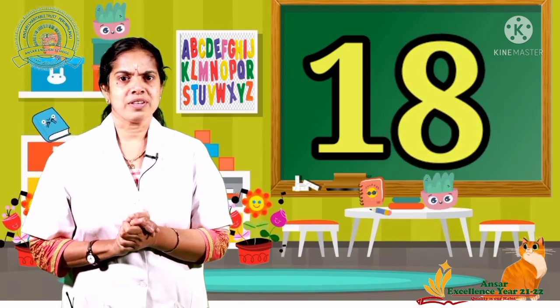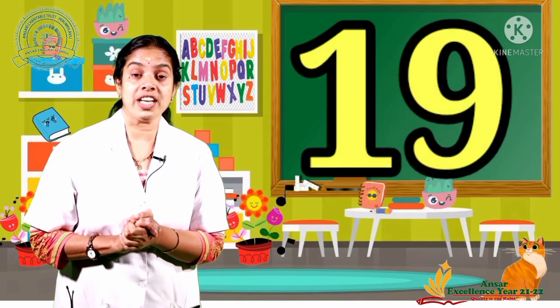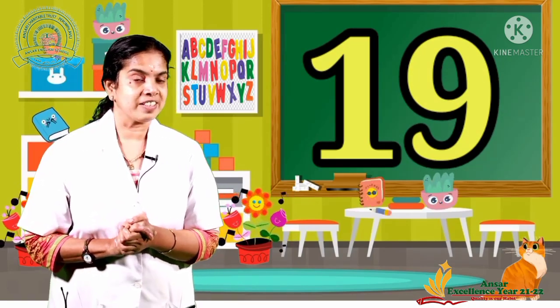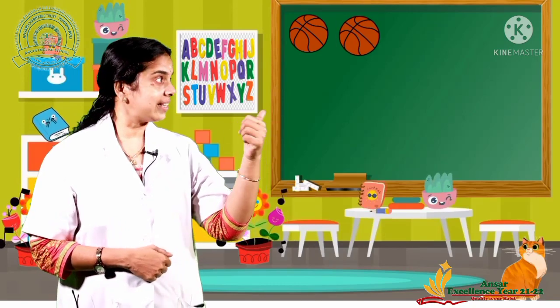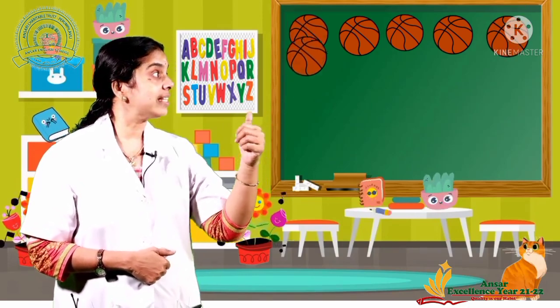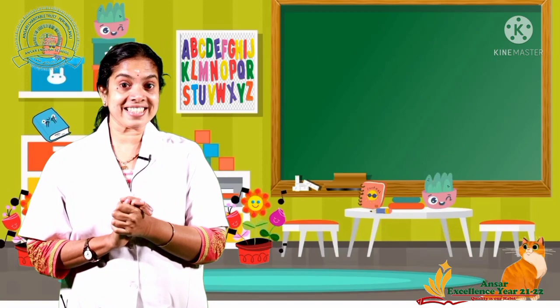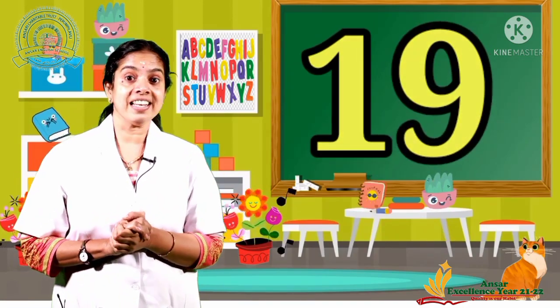Now which number comes after 18? It is 19. Let's count again. 1, 2, 3, 4, 5, 6, 7, 8, 9, 10, 11, 12, 13, 14, 15, 16, 17, 18, 19. Yes, it is 19. 1, 9 — 19.